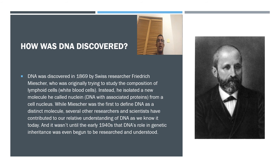How was DNA discovered? DNA was discovered in 1869 by a Swiss researcher, Friedrich Miescher, who was originally trying to study the composition of lymphoid cells, or white blood cells. Instead, he isolated a new molecule called nuclein — DNA with associated proteins — from a cell nucleus. While Miescher was the first to find DNA as a distinct molecule, several other researchers and scientists contributed to our understanding of DNA as we know it today. It wasn't until the early 1940s that DNA's role in genetic inheritance began to be researched and understood.